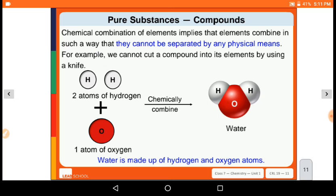Chemical combination of elements implies that the elements combine in such a way that they cannot be separated by physical means. For example, we cannot cut a compound into elements by using a knife.